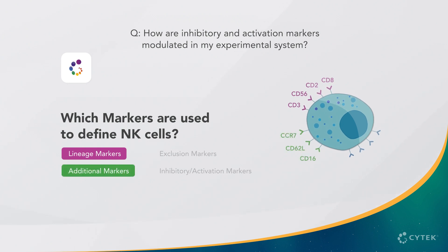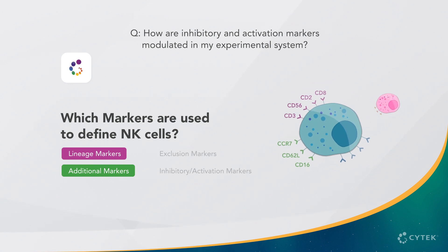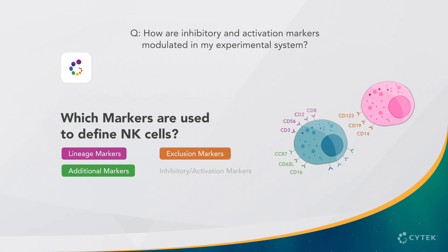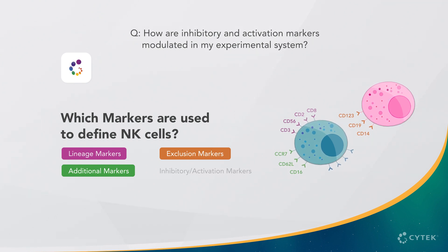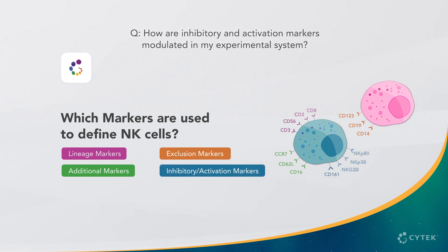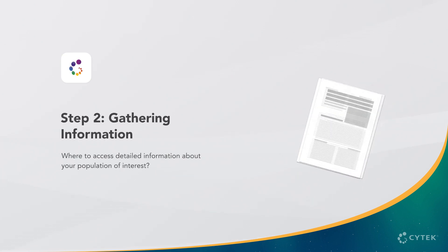You also need the markers that define NK cell subsets, such as CD16, and the exclusion markers to gate out unwanted cell types, such as CD14 for monocytes or CD19 for B cells. Finally, consider which markers are most critical to answer your scientific question. Next, we have Step 2: gathering information.